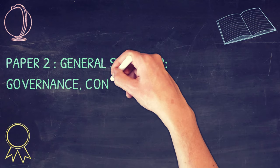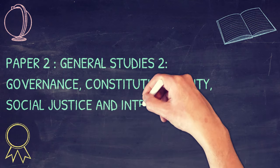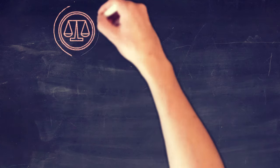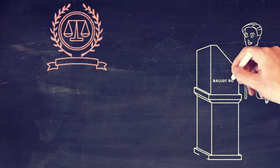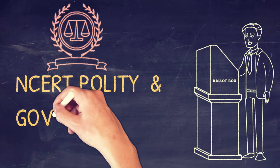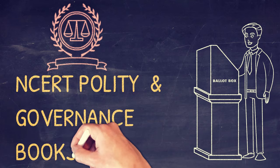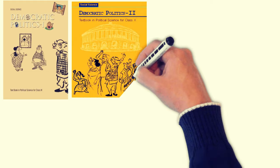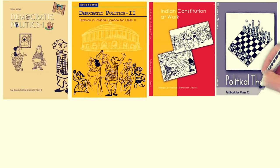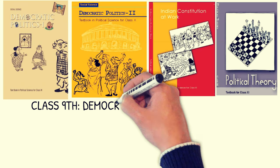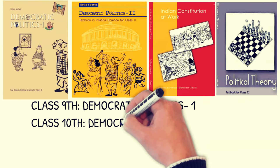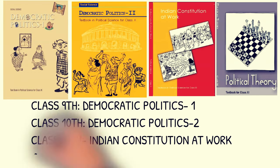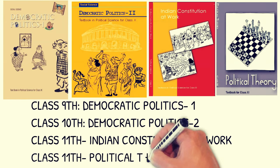Paper 2, General Studies 2: Governance, Constitution, Polity, Social Justice and International Relations. NCERT Polity and Governance books for UPSC exam: Class 9th Democratic Politics 1, Class 10th Democratic Politics 2, Class 11th Indian Constitution at Work, Class 11th Political Theory.